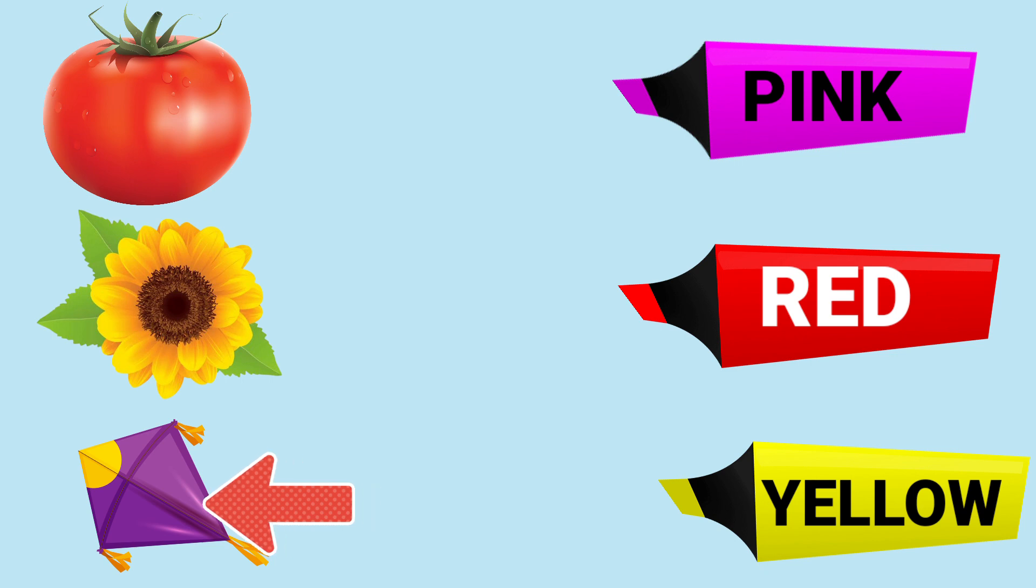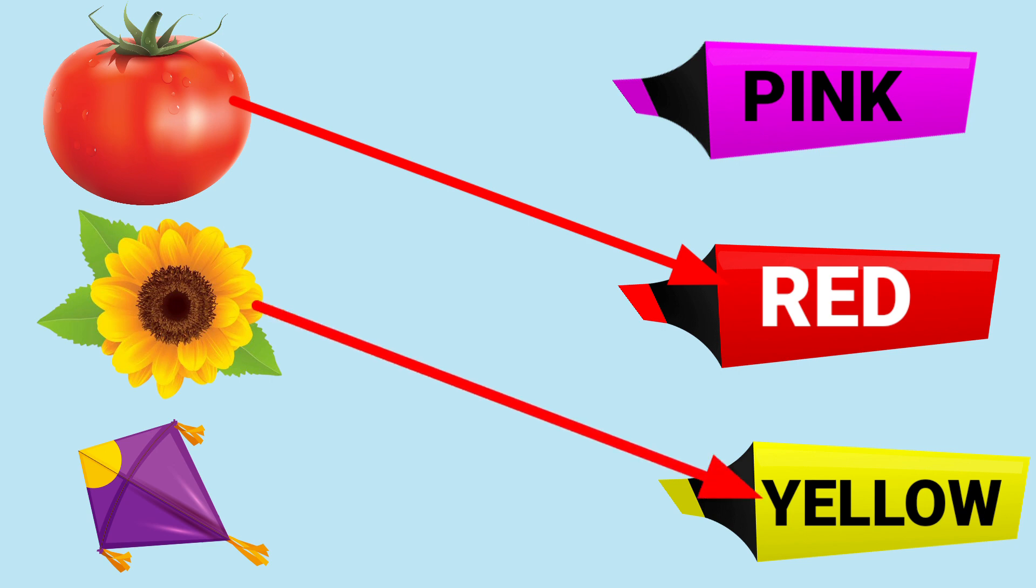So, see. First is tomato. Tomato, red. Red tomato. Next, sunflower. Sunflower is? Yes, very good. Sunflower is? Yellow.